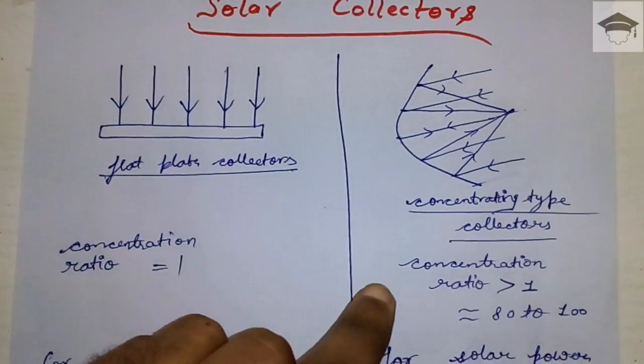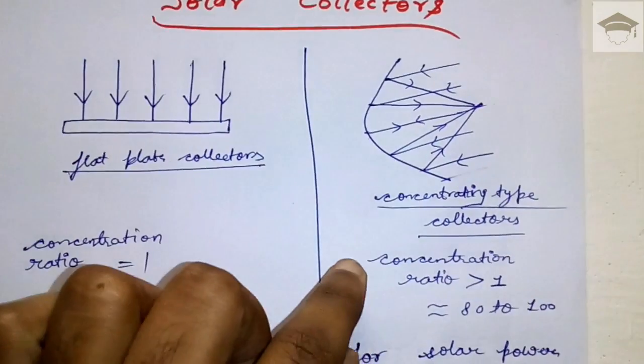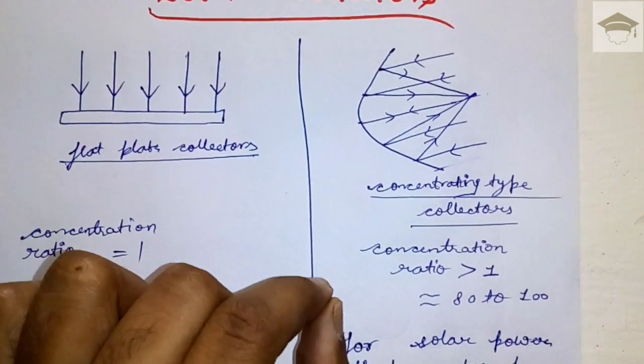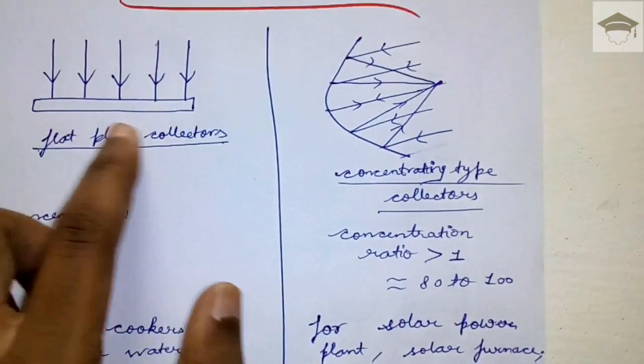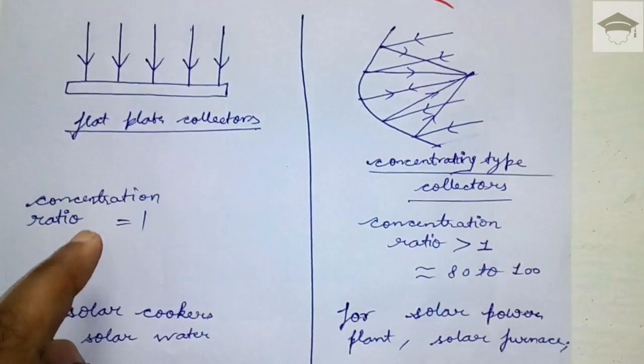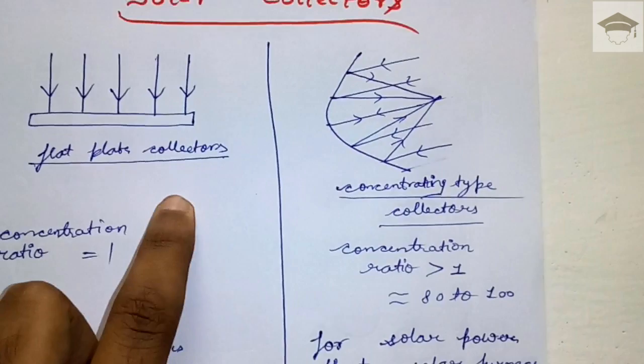Here, both areas - aperture and focus - are the same, so concentration ratio is one for flat plate collectors. For concentrating type collectors, the focus area is very small compared to the large aperture area, so concentration ratio is much larger, around 80 to 100.